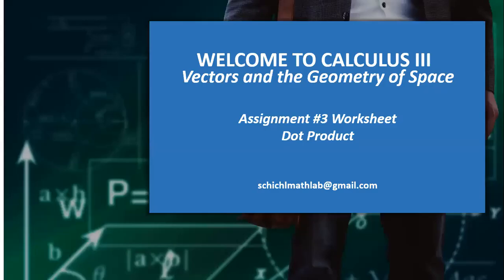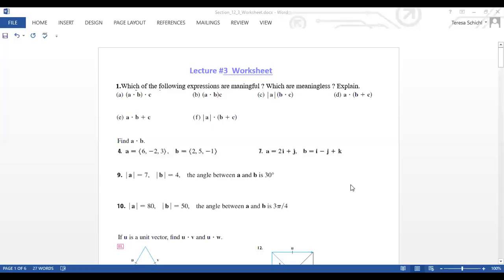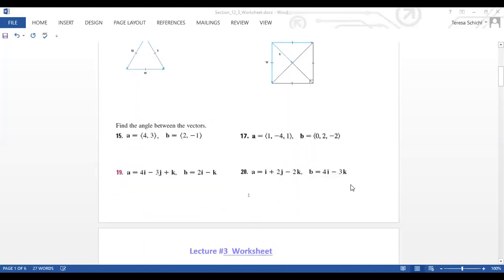Hi, welcome to Calculus 3. This is the practice unit and in this video we're going to take a look at Assignment Number 3 worksheets. It's related to the dot product. We are still in the unit vectors and the geometry of space. We have a lot of problems here and I'm going to work a few problems in this worksheet — those are problems maybe a little bit harder than what we talk about in the lecture series.